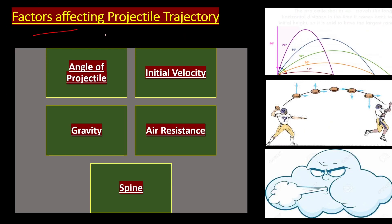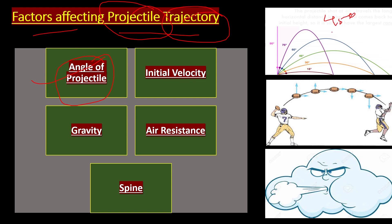Our last topic is factors affecting projectile trajectory. A projectile is any object thrown into the air, and its trajectory is the path it describes. First factor: angle of projectile — 45 degrees is the best angle considered for covering maximum distance. Second factor: initial velocity — the greater the force with which the object is thrown, the greater the distance covered.